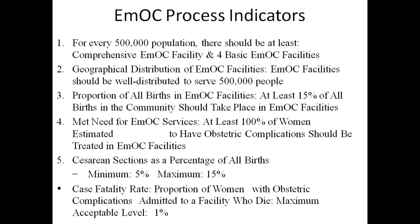The six process indicators are: For every five lakh population, there should be at least one comprehensive EMOC facility and four basic EMOC facilities. EMOC facilities should be geographically well distributed to serve five lakh people. At least 15% of all births in a community should take place in EMOC facilities. At least 100% of women estimated to have obstetric complications should be treated in EMOC centers.